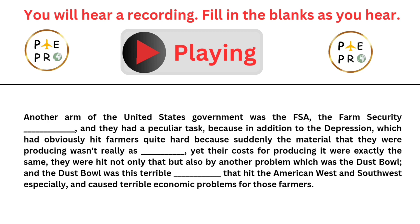Another arm of the United States government was the FSA, the Farm Security Administration. They had a peculiar task because in addition to the Depression, which had obviously hit farmers quite hard — suddenly the material that they were producing wasn't really as valuable, yet their costs for producing it were exactly the same.